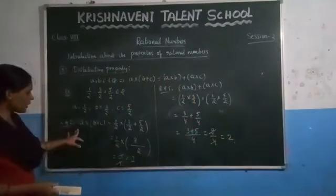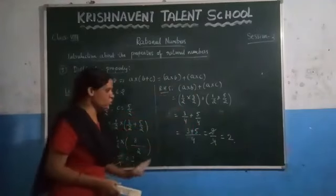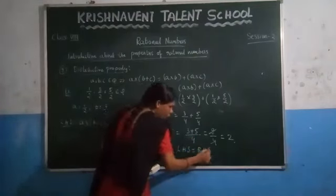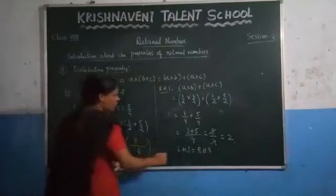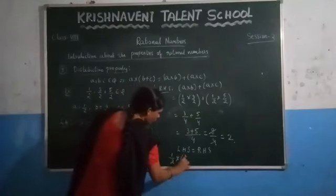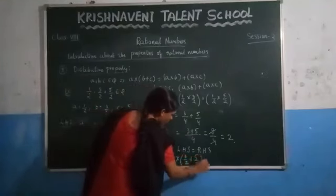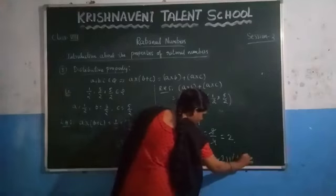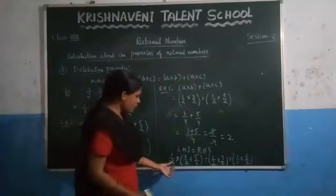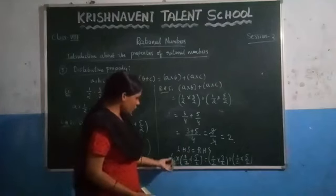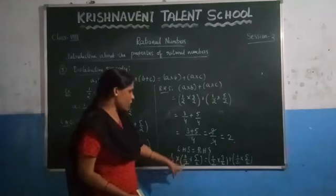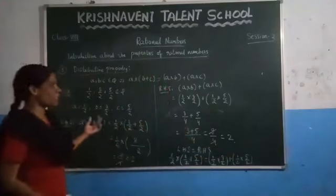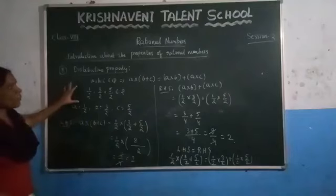If you take the LHS, you are getting the result as 2. And if you take the RHS, you are also getting the result as 2. So LHS equals RHS: 1 by 2 into (3 by 2 plus 5 by 2) equals 1 by 2 into 3 by 2 plus 1 by 2 into 5 by 2. We distributed 1 by 2 to both numbers. This property we call the distributive property. These are the properties of rational numbers.